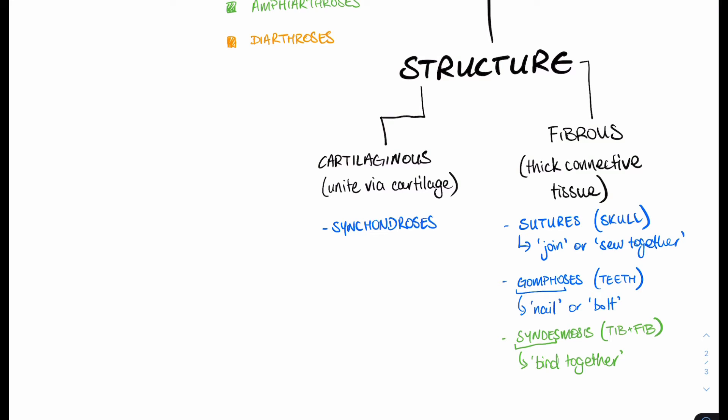The first one is synchondroses. Notice again in blue, so synchondroses, if you're classifying by structure, it's a cartilaginous joint. If you're classifying by function, it's going to be a synarthrotic joint. Syn, remember meaning together, chondro refers to cartilage, whereby cartilage puts two bones together in such a way that it's not going to allow movement. A prime example of this is the first costochondral joint. Costo, referring to ribs, and chondral, referring to cartilage. That's the bit of cartilage that's going to join the first rib to the sternum. No movement.